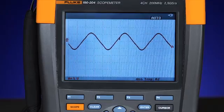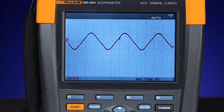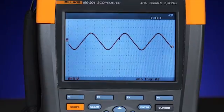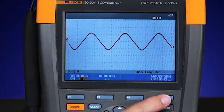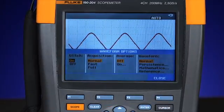The first step to set up pass-fail test mode is to capture the known good waveform and create a reference envelope. Press the scope mode, waveform options, and select reference.